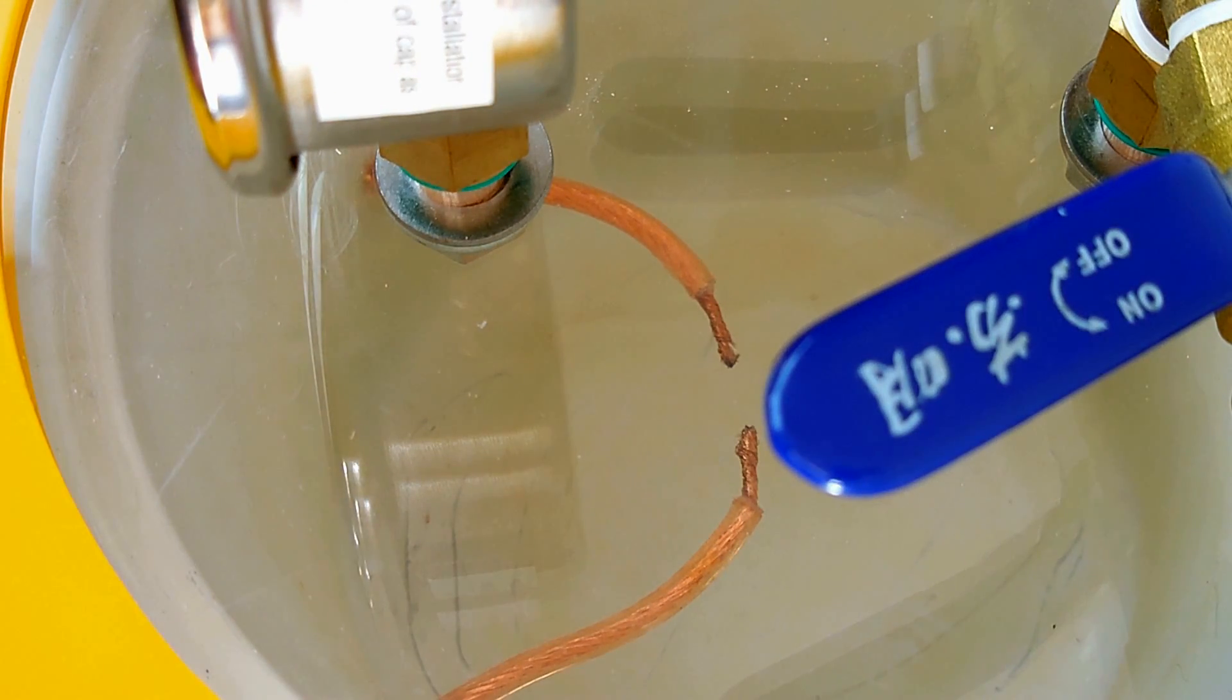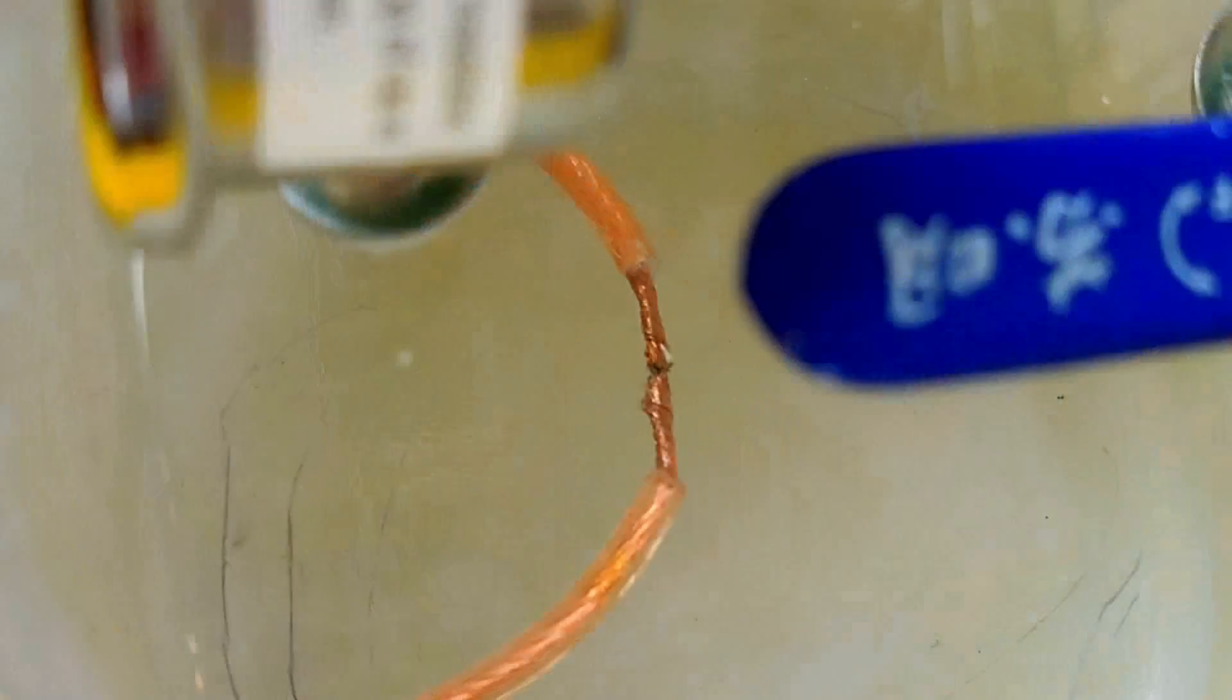Here's what the wires very close together under vacuum. No arc. I have a sixteenth of an inch space and we're only getting the corona. Let's slowly let the air back in.